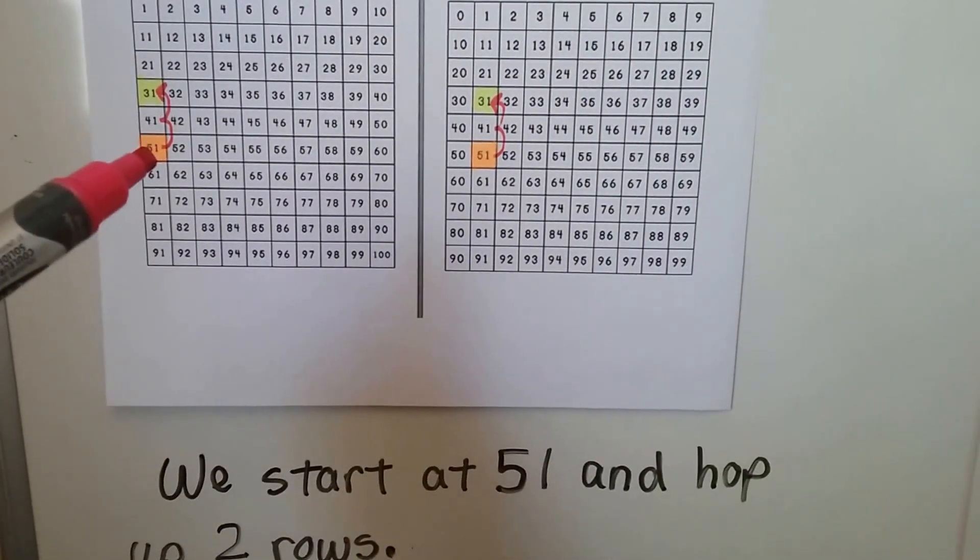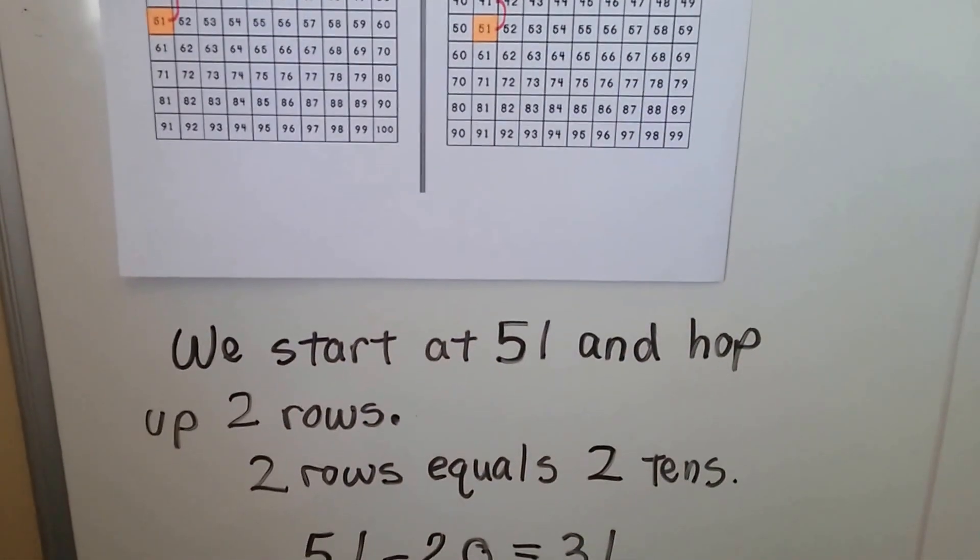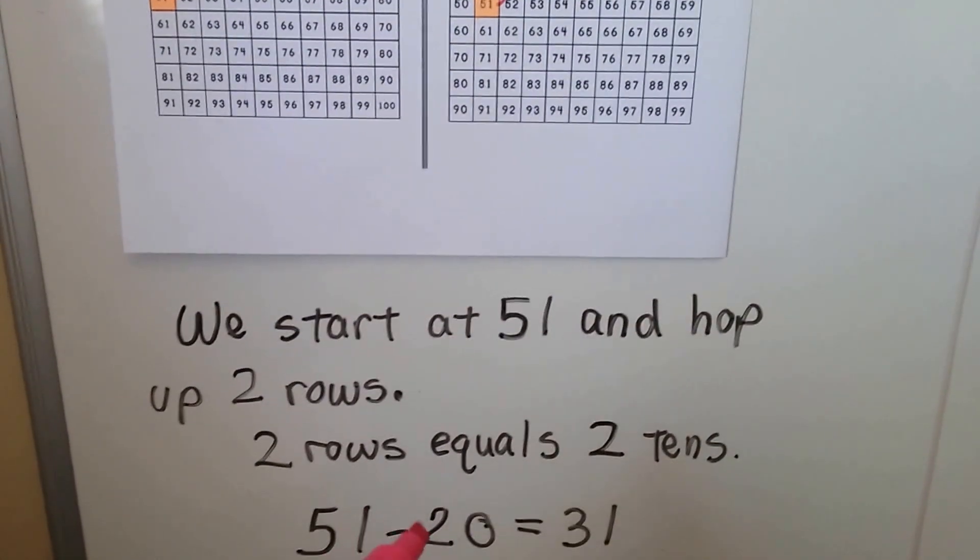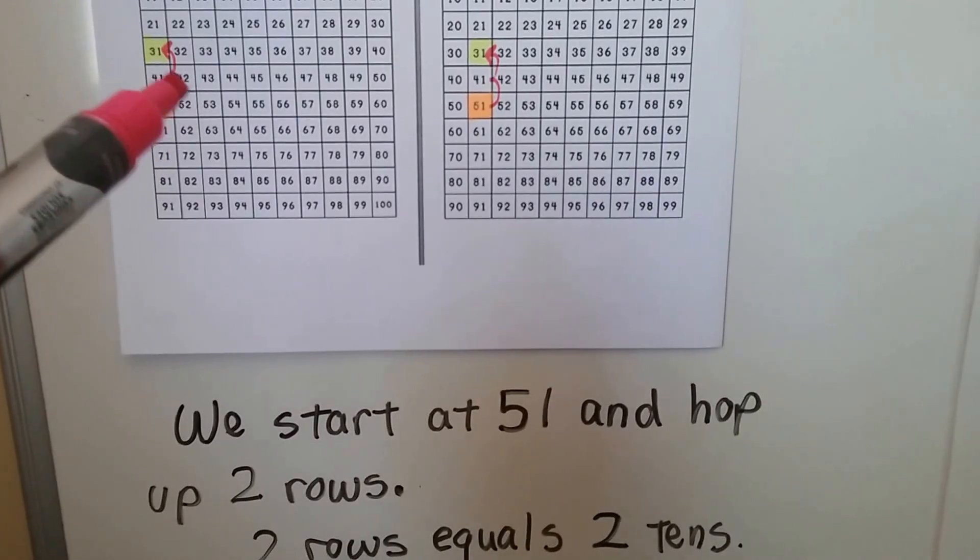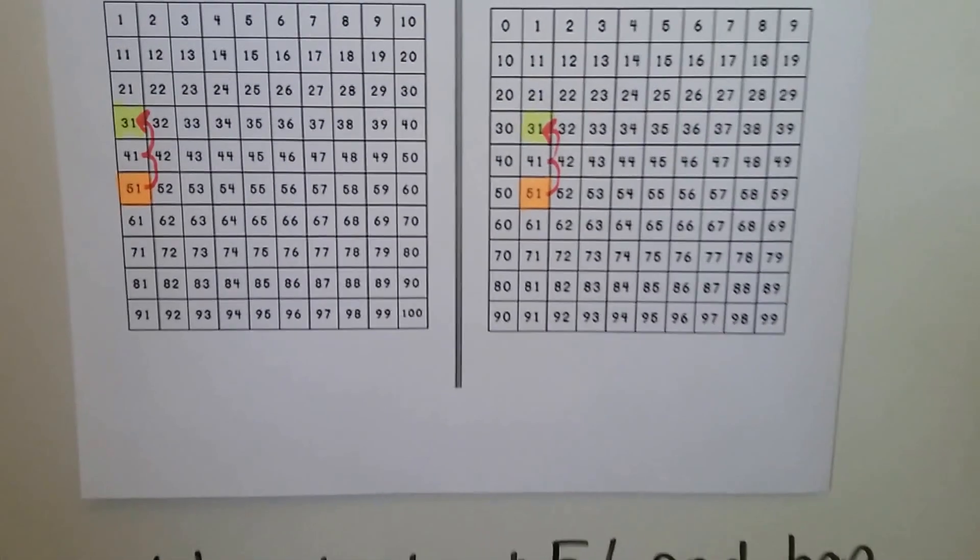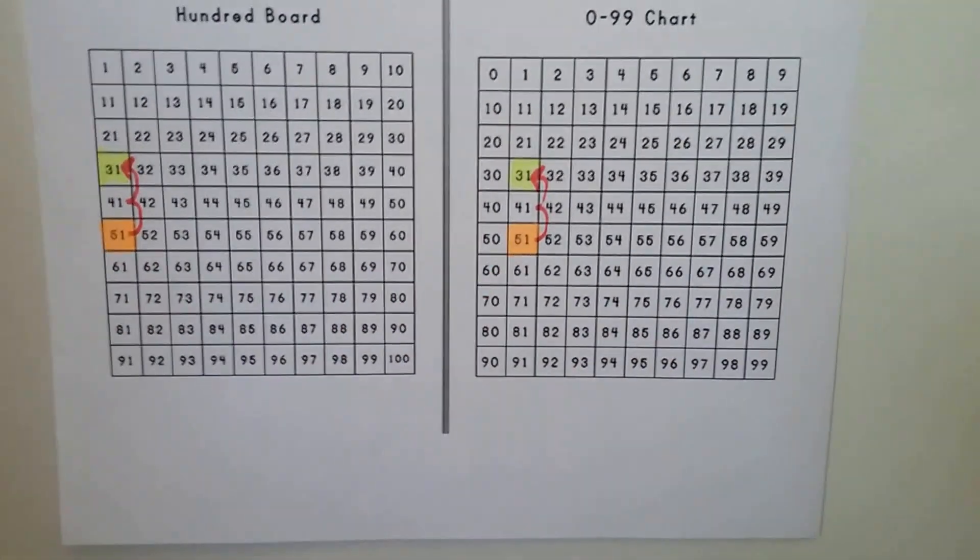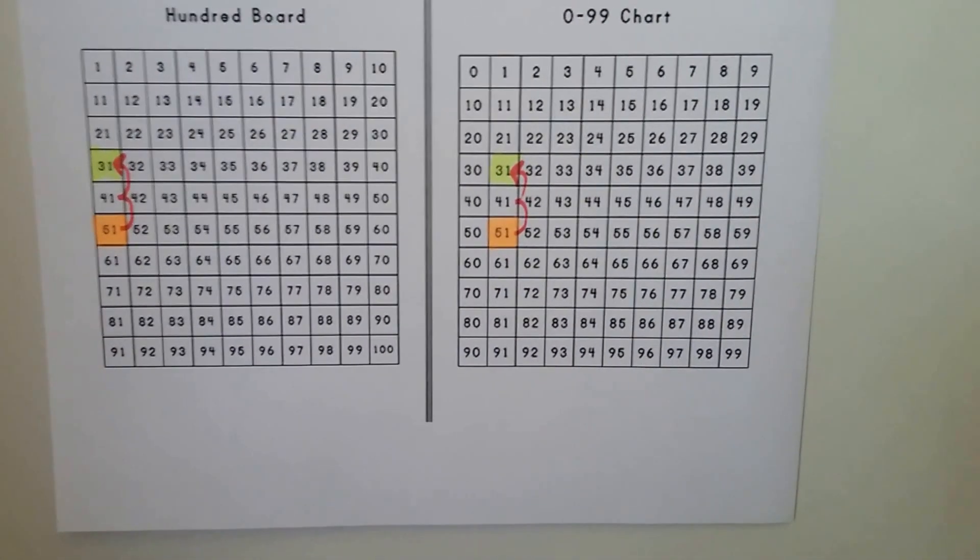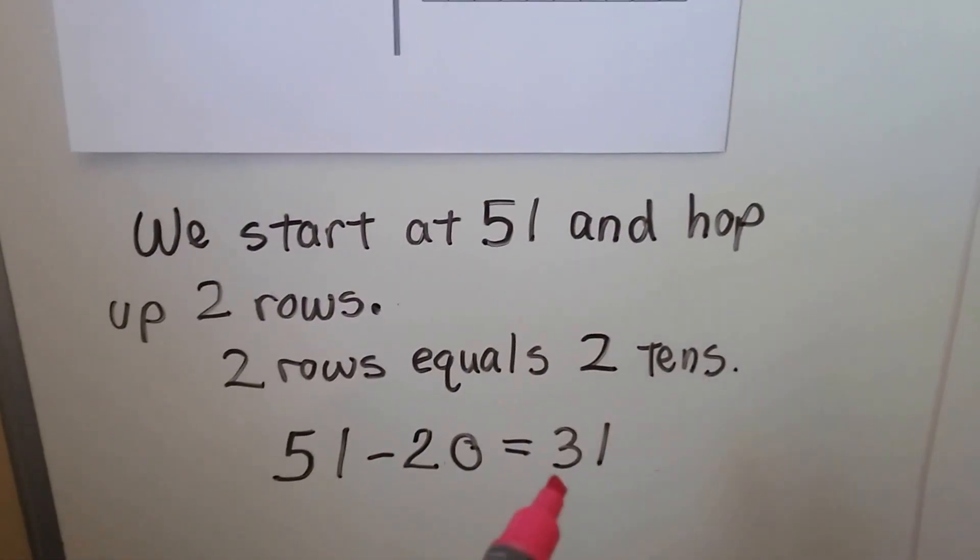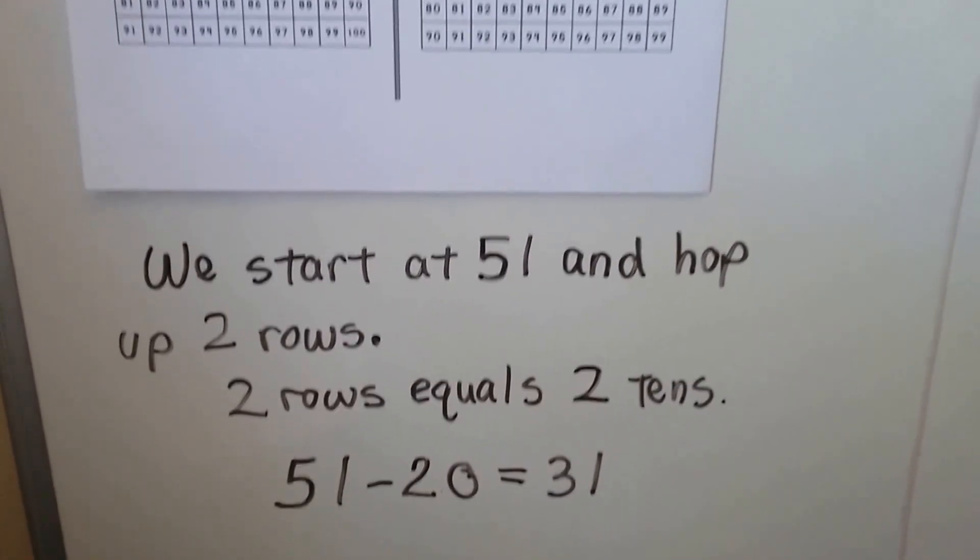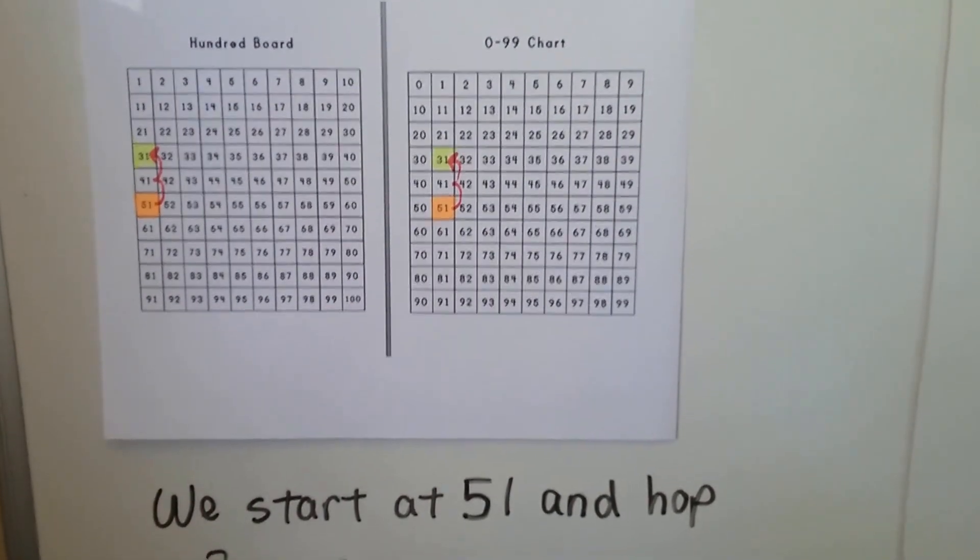We start at the 51 and hop up two rows. Two rows equals two tens. So if we want to take away a 20, that's two tens. We hop up two rows, 1, 2, and that brings us to 31. Either way, if we use a hundred board or a chart, it's gonna go up two rows. 51 minus 20 is equal to 31. We hopped up the two rows, and that's where it brought us, because we hopped up two tens. Each row is a 10.